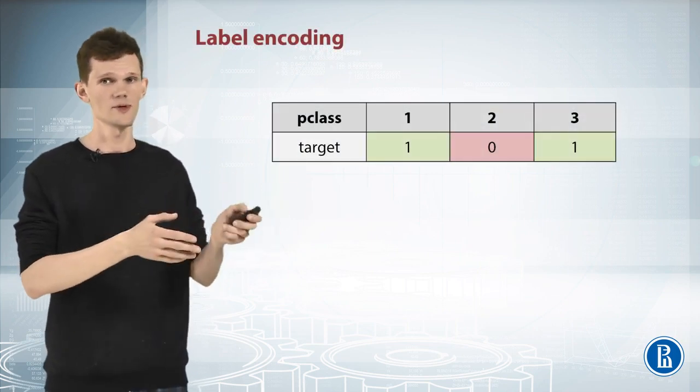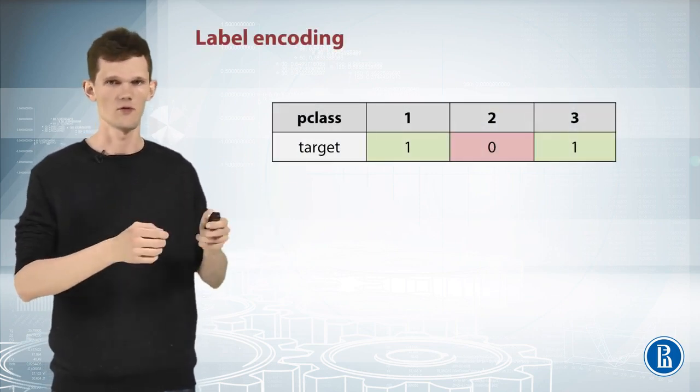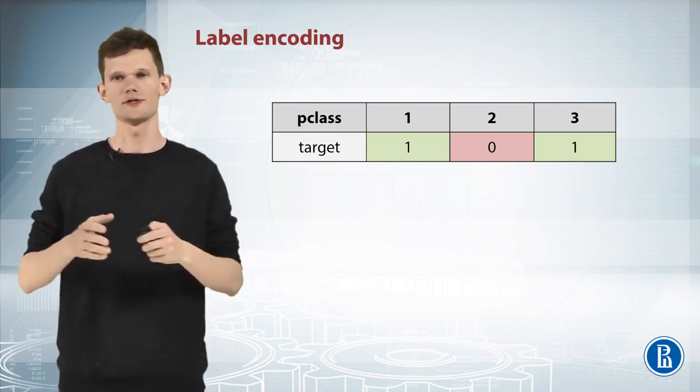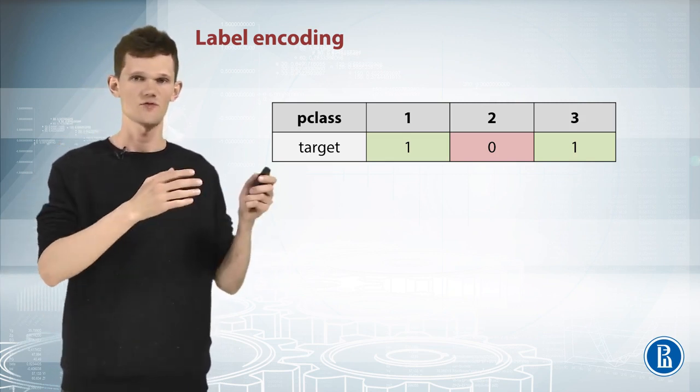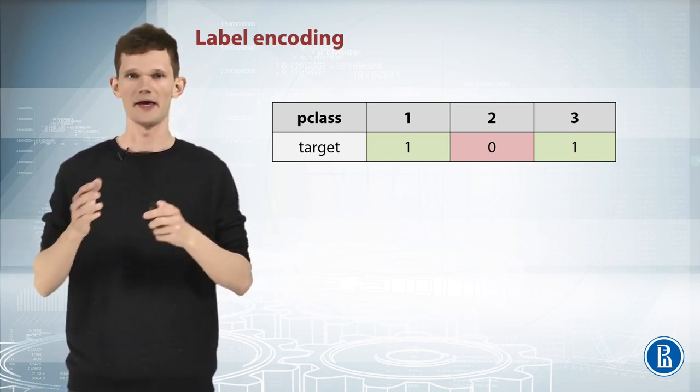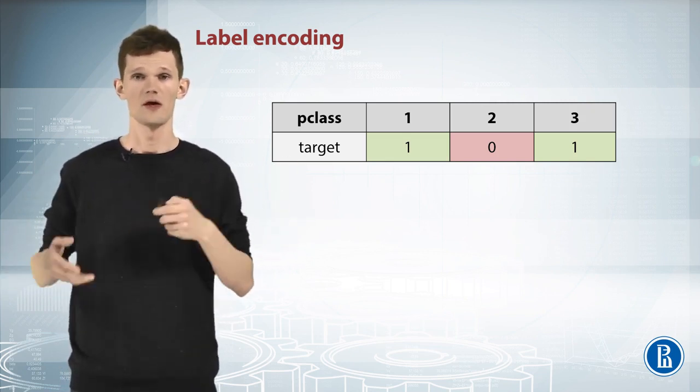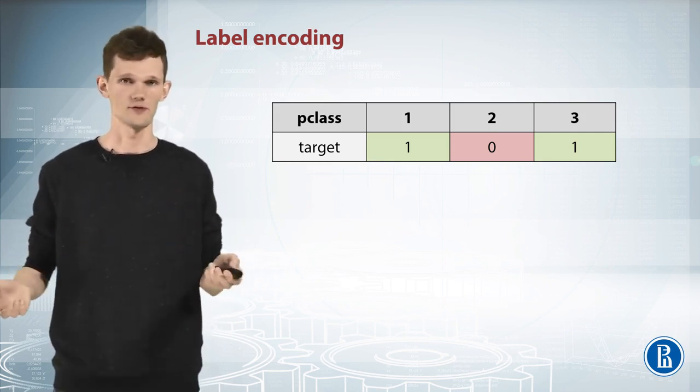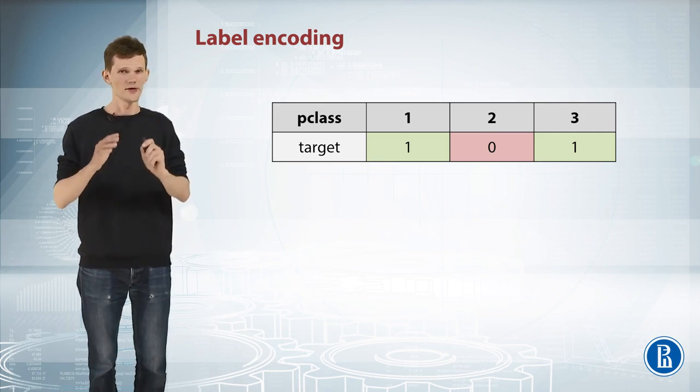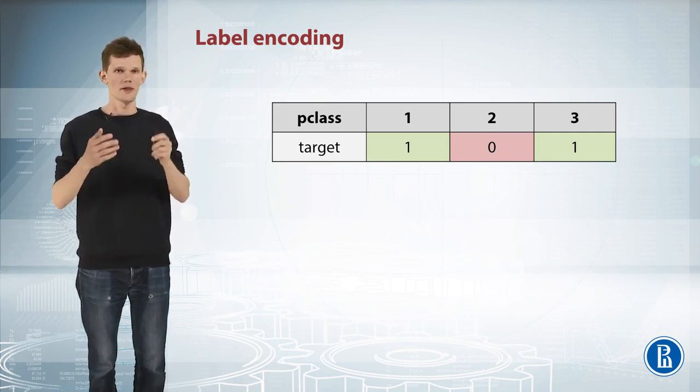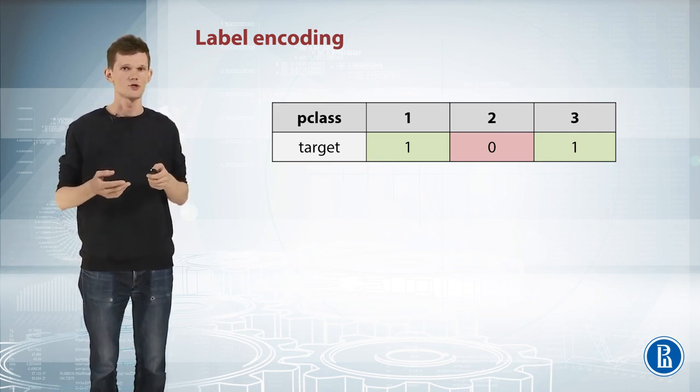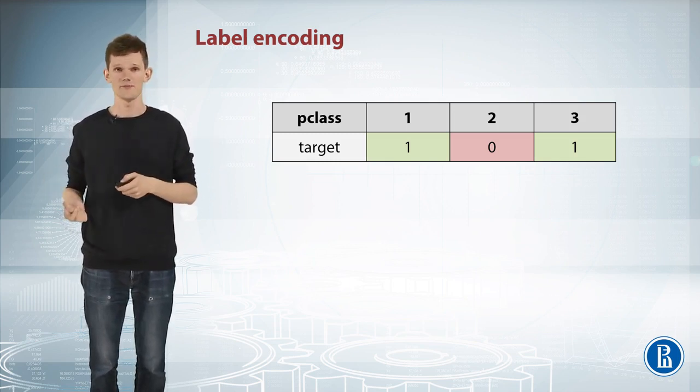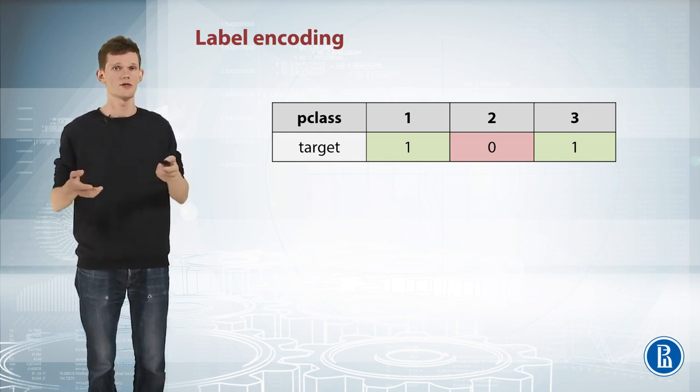To illustrate this, let's remember the example we had in the beginning of this topic. What if P-Class of 1 usually leads to target of 1, P-Class of 2 leads to 0, and P-Class of 3 leads to 1. This dependence is not linear and linear model will be confused. And indeed, here we can plot linear model's predictions and see that they all are around 0.5. This looks kind of sad.